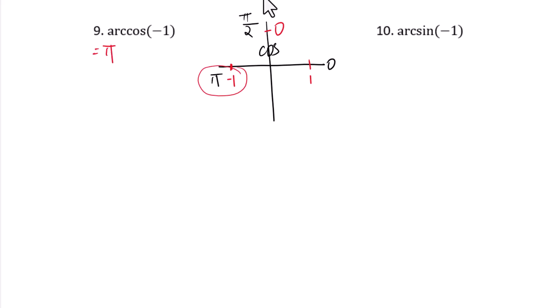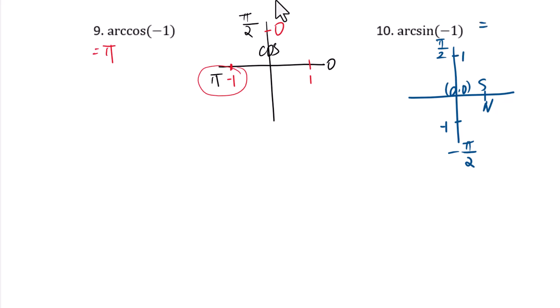Question 10: arc sine of negative 1. Looking at the sine graph with angles negative pi over 2, 0, pi over 2 corresponding to values negative 1, 0, 1 — arc sine of negative 1 equals negative pi over 2.